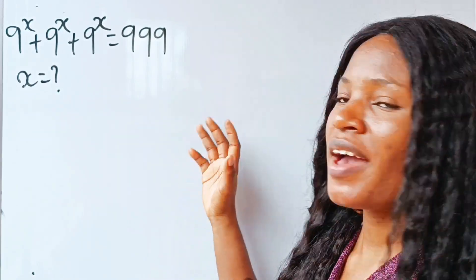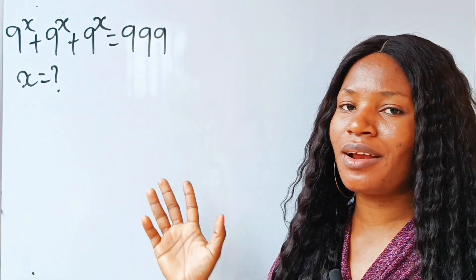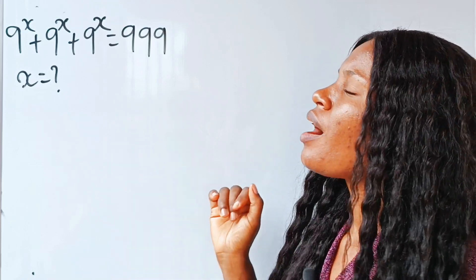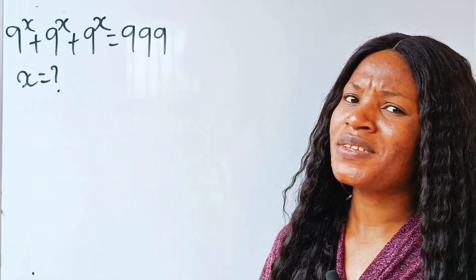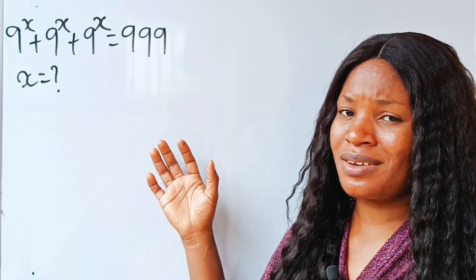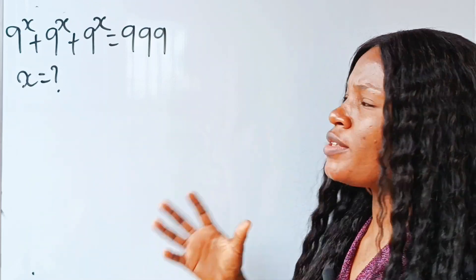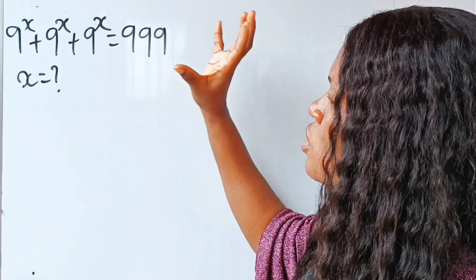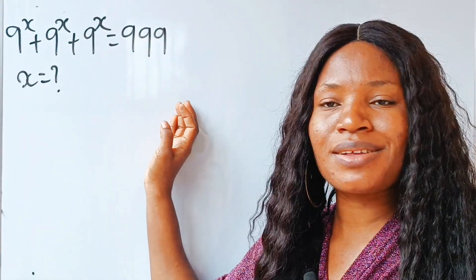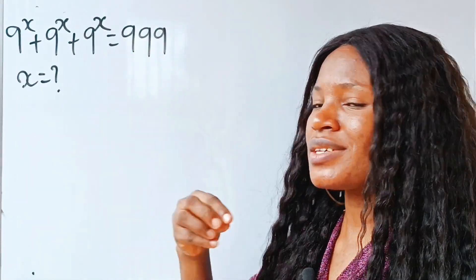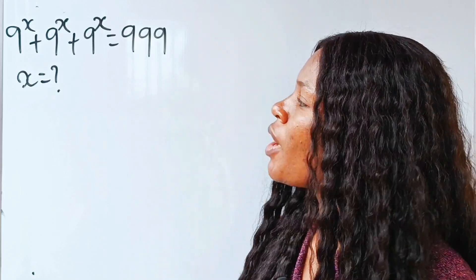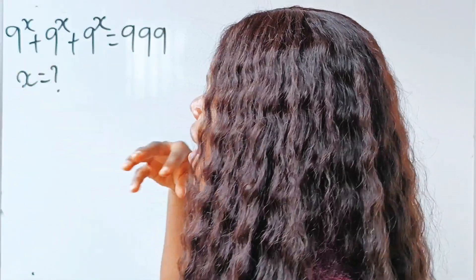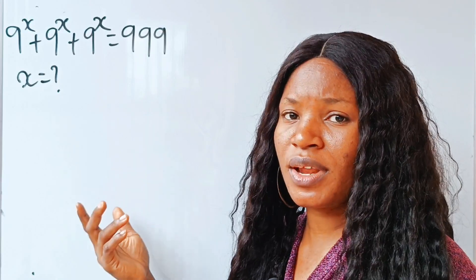Hello, let's solve for the value of x in this equation. It's actually a very interesting one. I would like you to stay to the end of this video because I'm going to substitute whatever I got back into the equation to show that what we got is right — it's a really interesting moment, don't miss it. So first, what do they have in common? They have 9 to the power of x in common.